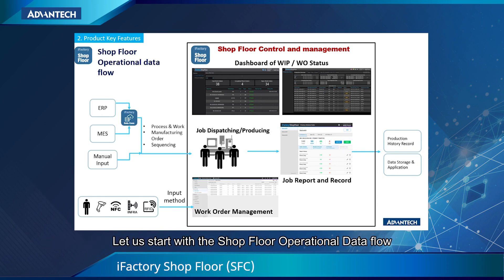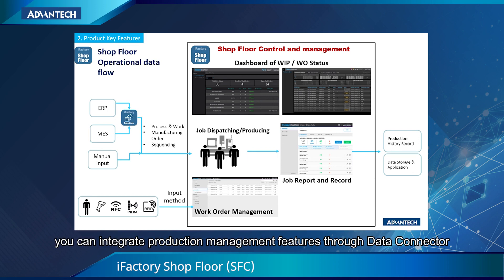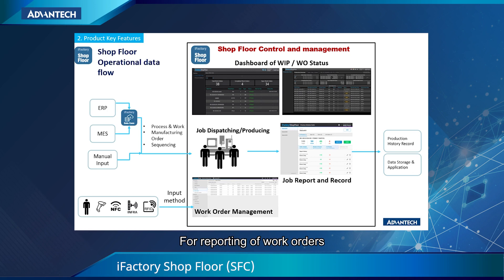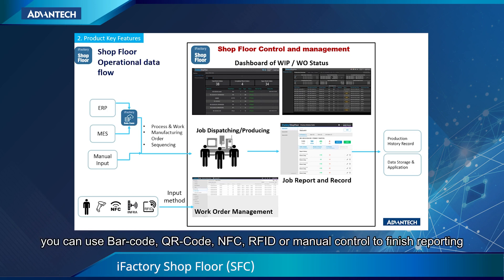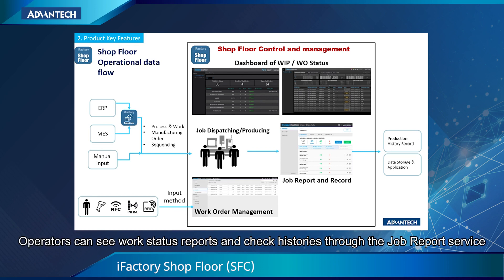Let us start with the Shopfloor 4 operational data board. From the left-hand side of the slides, you can see multiple data interfaces and ways of inputting. From an external system such as ERP or MES, you can integrate product management features from Data Connector. For reporting of work orders, you can use barcode, QR code, NFC, RFID, or manual control to finish reporting. Production information status is visually presented on the dashboard. Operators can see work status reports and check history through the job report service.